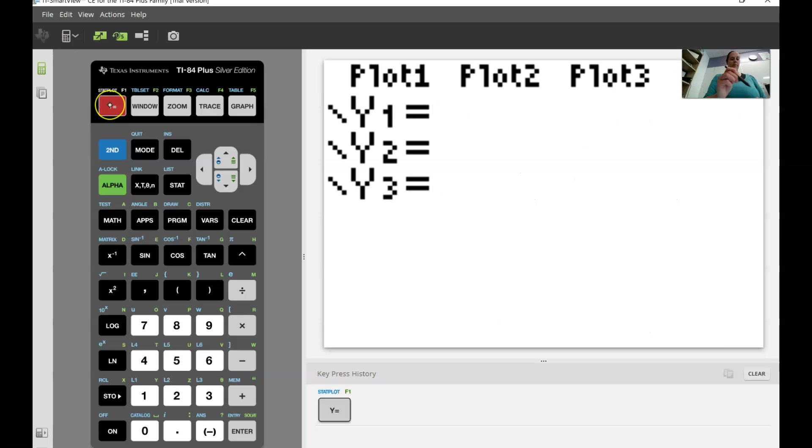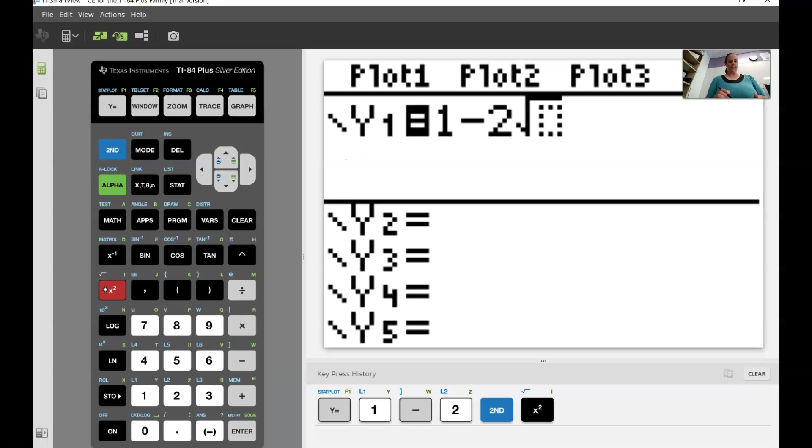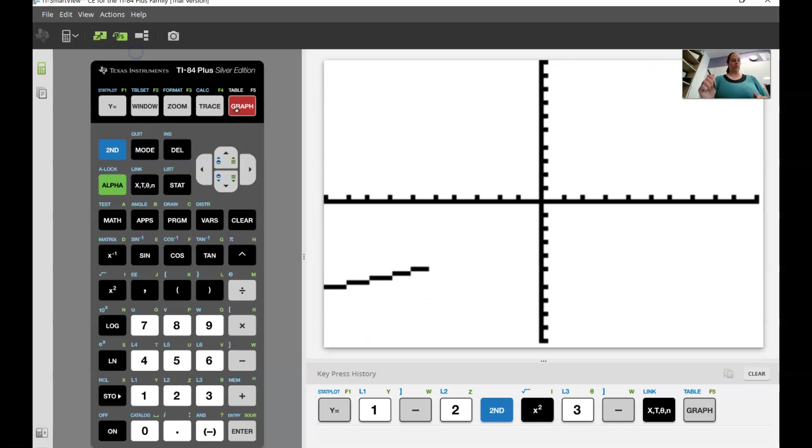So we're going to start here. On your graphing calculator, you're going to go to y equals, and you'll see down here in the bottom my key press history, so that if you get lost, you can see what keys I hit to get to where we are. So now we've got to type in our equation for question 10. Looks like number 10 is 1 minus 2. I need my square root, which I can get by second squared, square root of 3 minus x. Double check. That looks right. So now I'm going to go to graph.